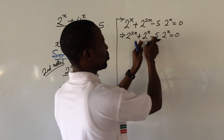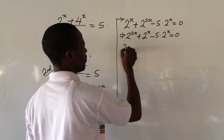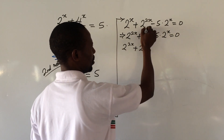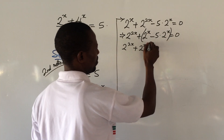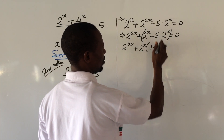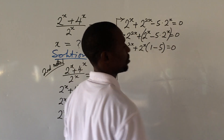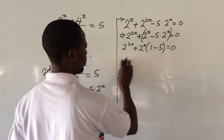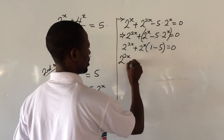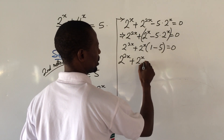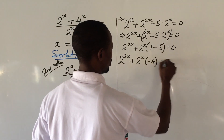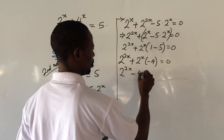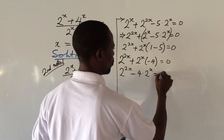Combining like terms, 2^x − 5 · 2^x gives us −4 · 2^x, so we have 2^(2x) − 4 · 2^x = 0. We factor out 2^x: 2^x · (2^x − 4) = 0.